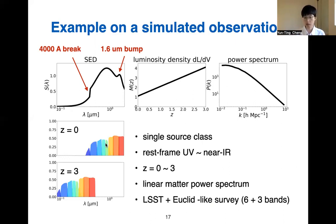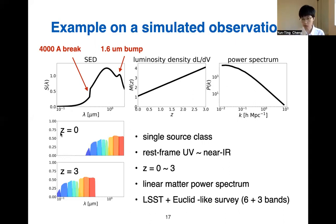We consider the signal coming from a redshift range of about zero to three. At redshift zero, we probe the SED at longer wavelengths, and at higher redshift we probe the SED in the UV to optical parts. With this simulated signal and mock observation, we model the data covariance C_L(λ, λ') and feed it into our algorithm to try to extract the input signal — the SED, the luminosity density, and the power spectrum.